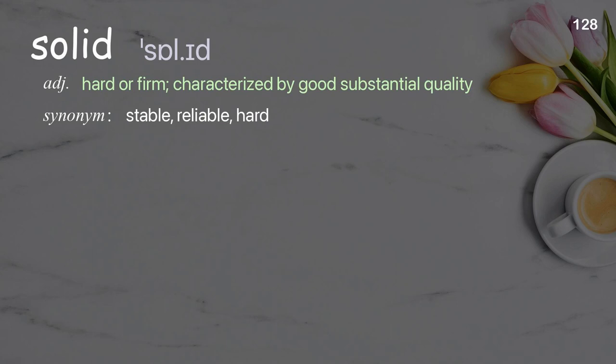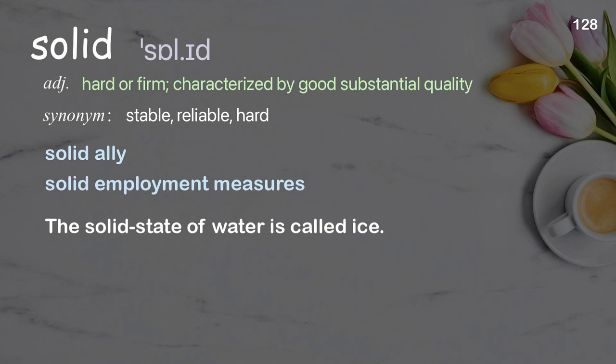Solid: hard or firm; characterized by good substantial quality. Examples: solid ally; solid employment measures. The solid state of water is called ice.